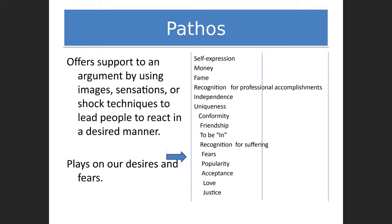The second type of appeal is pathos, which appeals to your heart — emotions. It offers support to an argument by using images, sensations, or shock techniques to lead people to react in a certain manner. Pathos plays especially on our desires and our fears: desires for self-expression, money, fame, recognition, independence, uniqueness, conformity, friendship, and popularity; or fears of not being accepted, recognized, or included.